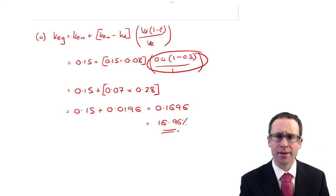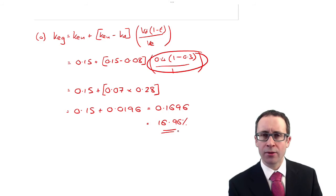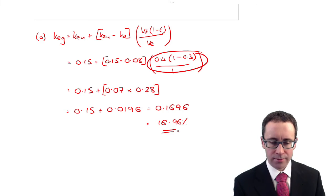So we have 0.15 plus, that will be 0.07 multiplied by the 0.28. Multiply 0.28 by 0.07, so that gives me 0.15 plus 0.0196. So KEG is 0.1696, which is 16.96%, or to you and I, 17%. There you go. That's part A.